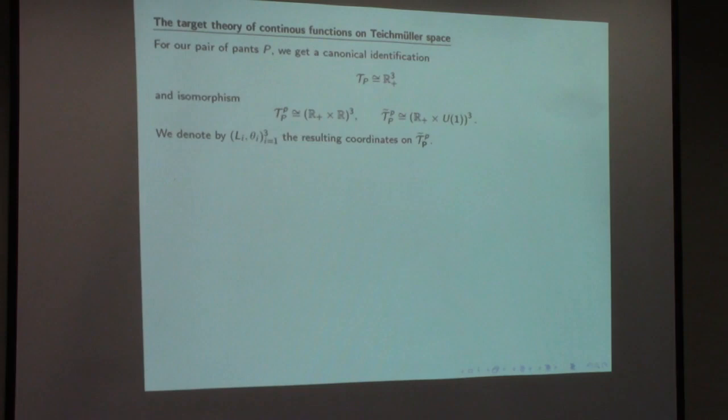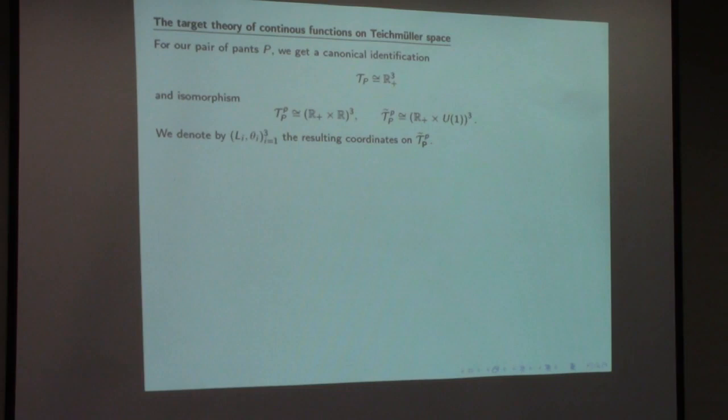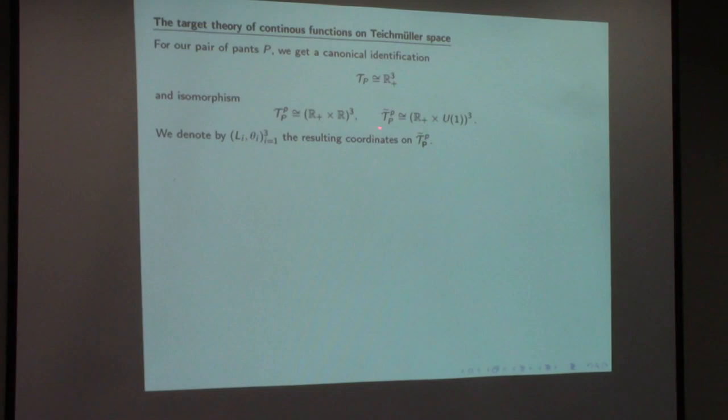For a pair of pants, the Teichmüller space T is simply R_+^3: the hyperbolic structure is exactly determined by the lengths of the three geodesic boundary components. For T^P it would be R_+^3 × R^3 with the extra twist parameters. Dividing by boundary-parallel Dehn twists gives R_+^3 × U(1)^3, with coordinates L_i (lengths) and theta_i (twist parameters) for i=1,2,3.